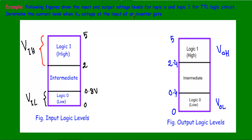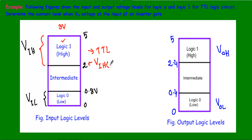The following figure shows the input and output voltage labels for logic 0 and logic 1 for a TTL logic circuit. For a TTL circuit, any voltage from 2 volts to 5 volts will be treated as logic 1 at the input. So if I apply 3 volts at the TTL input, that means I am applying logic 1. Here 2 volts indicates VIH min and 5 volts indicates VIH max.